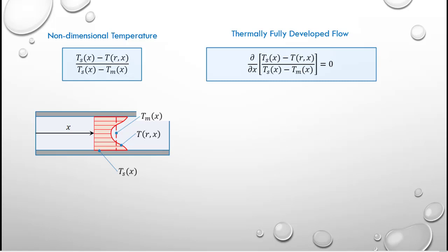We will define a flow as being thermally fully developed when the spatial derivative of the non-dimensional temperature equals zero, which means that the non-dimensional temperature is a constant as a function of X.